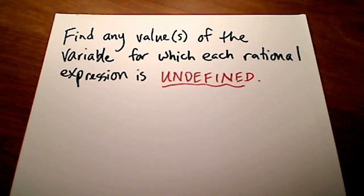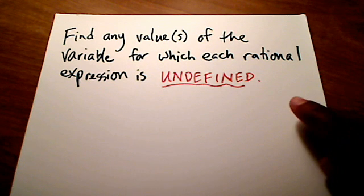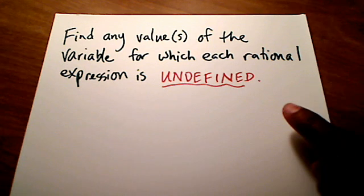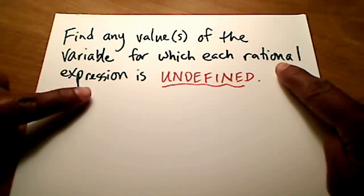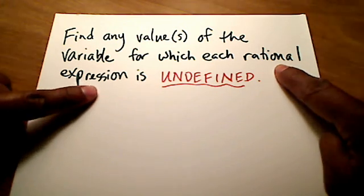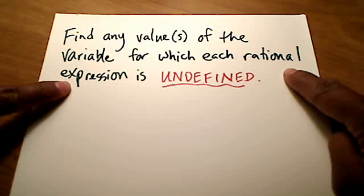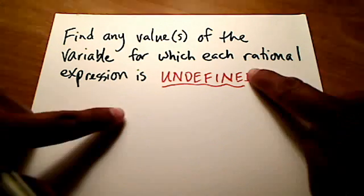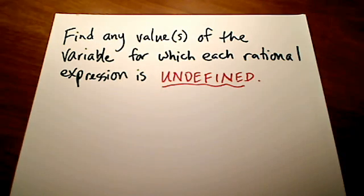In this video I want to explain and show how to find values for which a variable would make a rational expression undefined. A rational expression is just a fancy way of saying a fraction. A rational expression is just a fraction, like two-fifths or three-eighths, except these rational expressions have variables in them.